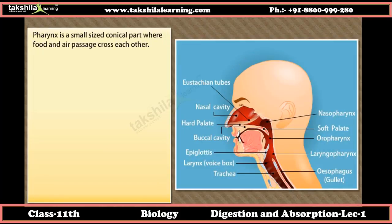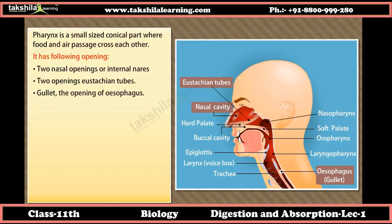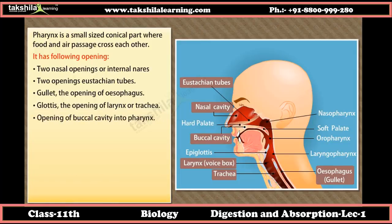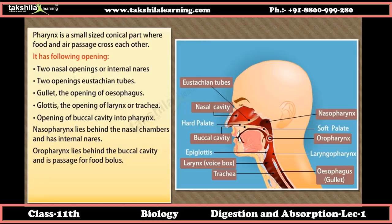The pharynx is a small-sized conical part where food and air passages cross each other. It has openings including two nasal openings or internal nares, two openings to the Eustachian tubes, the gullet (opening of esophagus), the glottis (opening of larynx or trachea), and the opening of the buccal cavity. The nasopharynx lies behind the nasal chambers, and the oropharynx lies behind the buccal cavity as the passage for food bolus.